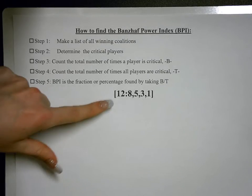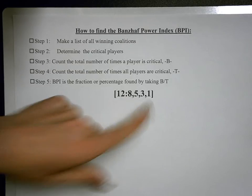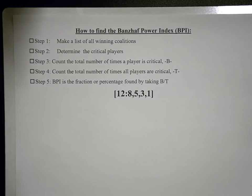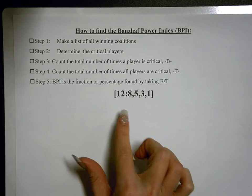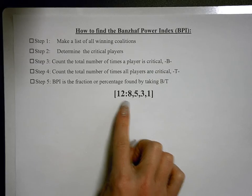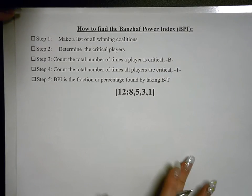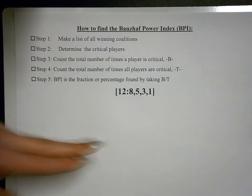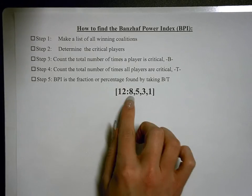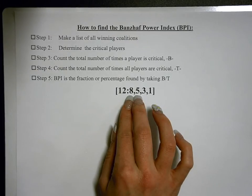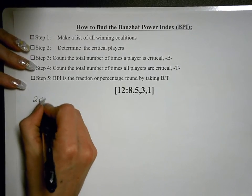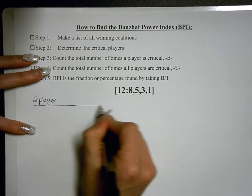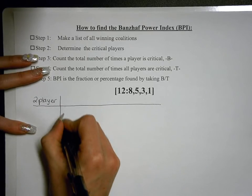We're going to start with this particular weighted voting system. It has a quota of 12, and there are four players. The first thing we're going to do is make a list of all the winning coalitions. I'll look to see if there are any one-player winning coalitions — does anybody have enough votes to pass a motion by themselves? Nobody has 12 or more, so there are no one-player winning coalitions. I'll set up a table. For two-player coalitions, player one and player two combine for 13 votes, which is enough to pass a motion.